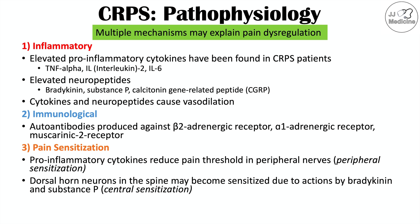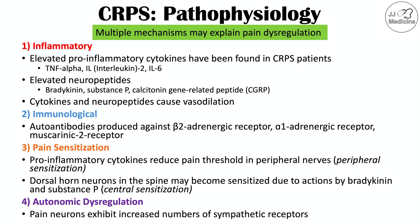Elevated neuropeptides like bradykinin and substance P can act on dorsal horn neurons within the spine to make those neurons more sensitive — this is central sensitization. Both peripheral and central sensitization, ultimately due to inflammatory changes, lead to increased pain sensitivity, a key hallmark of this condition. Additionally, there is autonomic dysregulation: certain pain neurons exhibit increased numbers of sympathetic receptors, which may explain why stressors worsen pain, as catecholamine release acts on those sympathetic receptors.